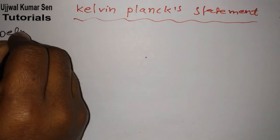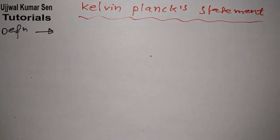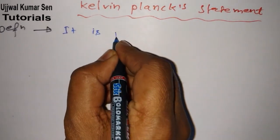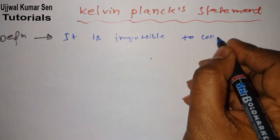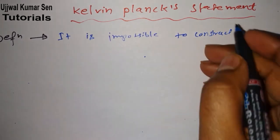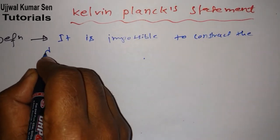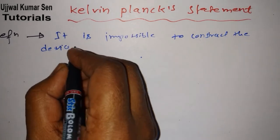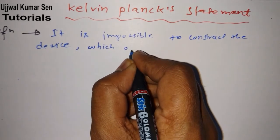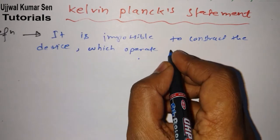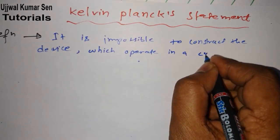What is the definition of this statement? After definition we will discuss this and it will be quite fruitful for you to know more about Kelvin Planck's. So what is the definition? It is impossible to construct the device which operates in a cycle producing network